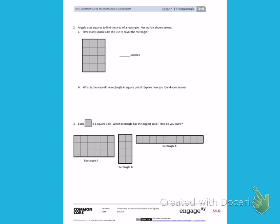To find how many squares she used, I'm going to count the squares. 1, 2, 3, 4, 5, 6, 7, 8, 9, 10, 11, 12. She used 12 squares to cover the rectangle.